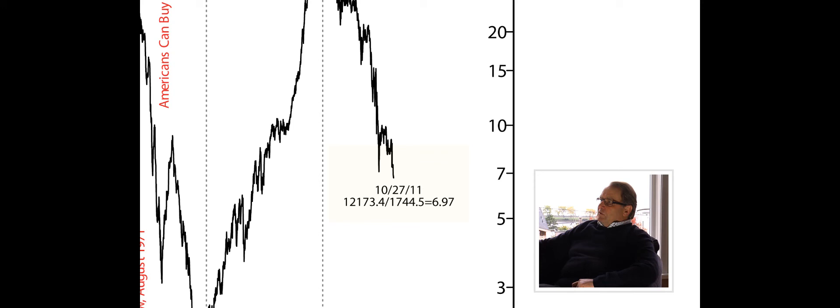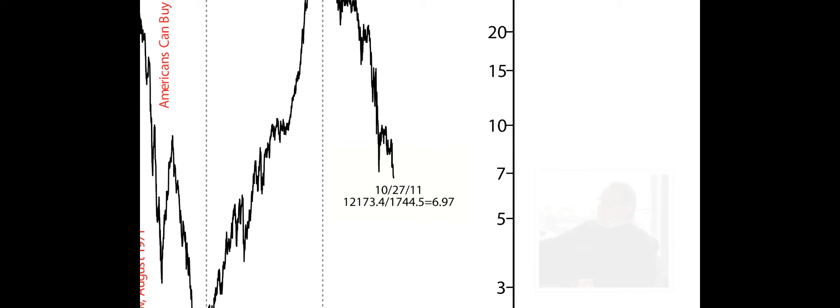And as I said, we've now come down to a seven to one relationship. Seven ounces of gold to buy the Dow Jones Industrials. Where is this going? Where is it going to bottom? Well, we believe that the bottom is going to be substantially below the two previous lows, which are about a one to one relationship. We think because this high was so extreme here that we will also get an extreme low.